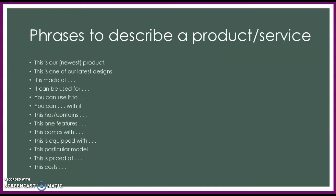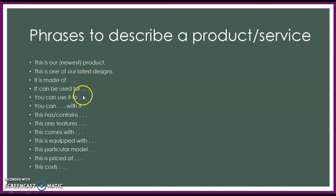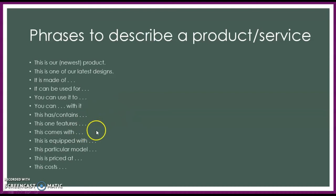Here are more phrases you can use to describe your product or service. Some examples are: 'This is our product.' 'This is one of our latest designs.' 'It is made of...' 'It can be used for...' 'You can use it...' 'It contains the features...' 'This comes with...' 'This is priced at...' 'This costs...' Bear in mind that these are the phrases you are going to use in your oral presentation assessment.